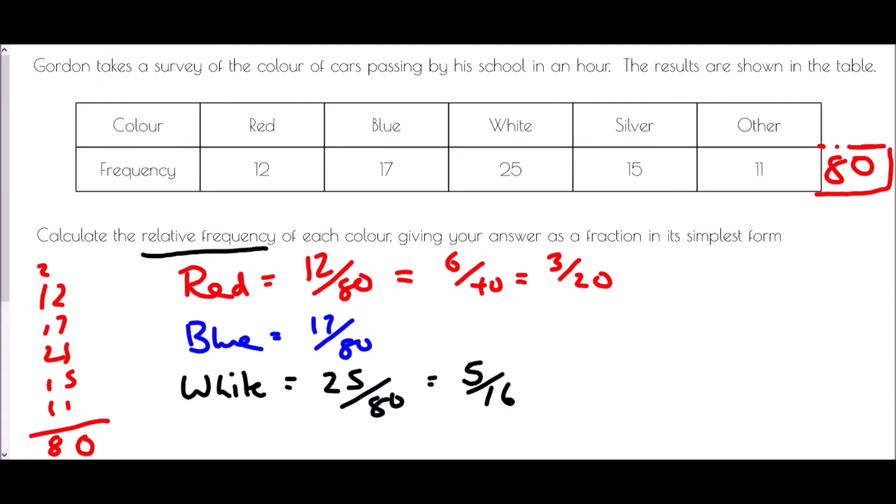The silver cars, well there were 15 of them out of 80. And so let's divide them both by 5, that's going to be 3 out of 16. And finally the other, well there were 11 other cars out of the 80 in total, and again that is actually the simplest form.